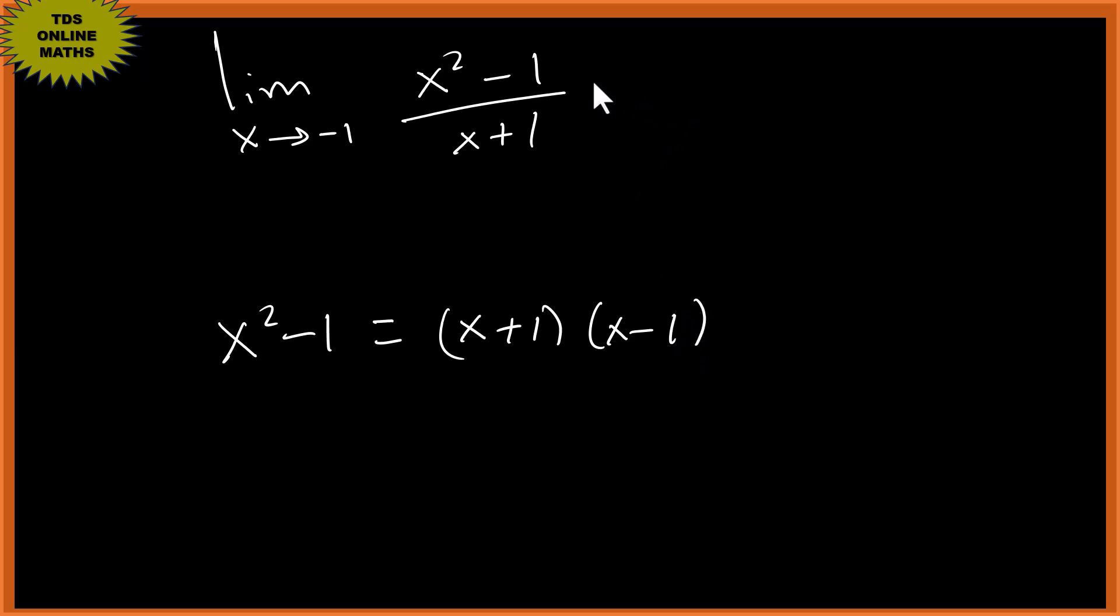So this side will be x plus one times x minus one over x plus one. Okay, so we can do cancellation here, which will be x minus one.